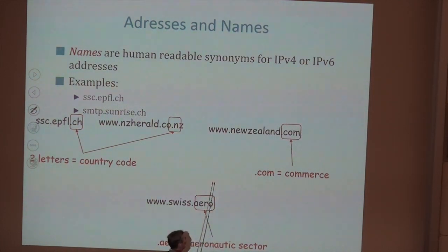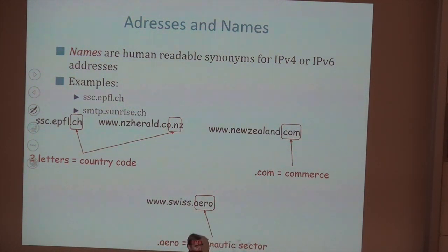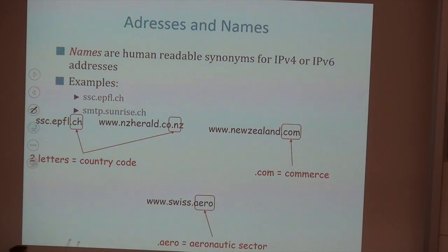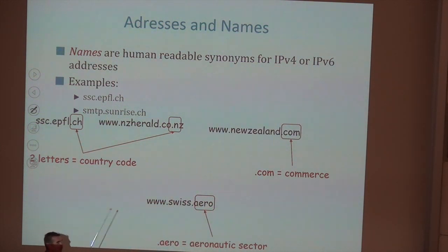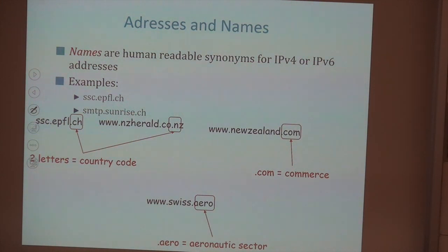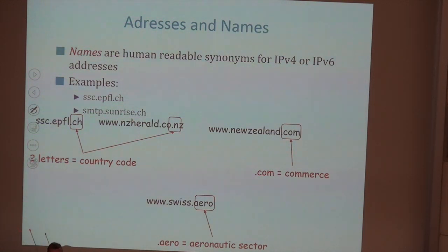Today most of the internet is for profit, so .com is the most popular domain. Human creativity has invented more complex names like .aero, which you get only if you work in the aeronautics sector. There's even .swiss, which is much more expensive to get than a .ch name — essentially ways to make money out of names.